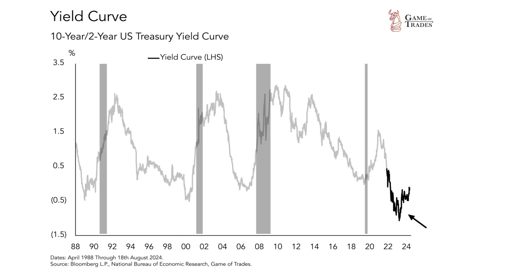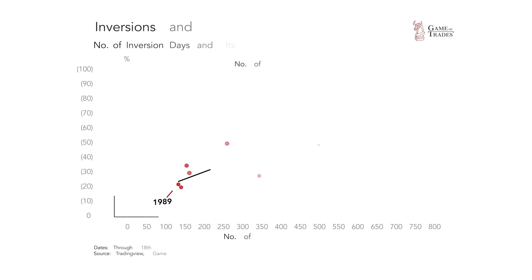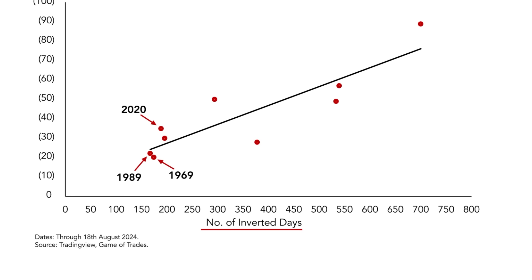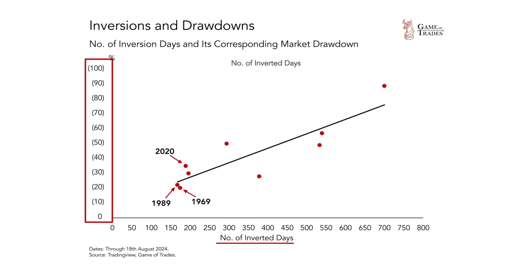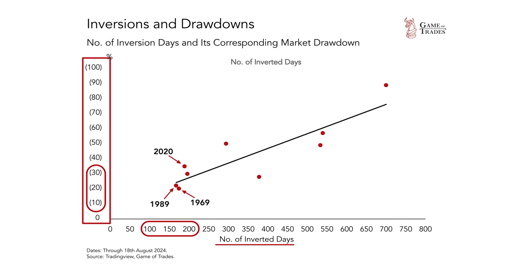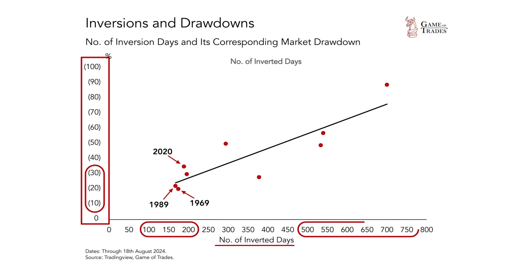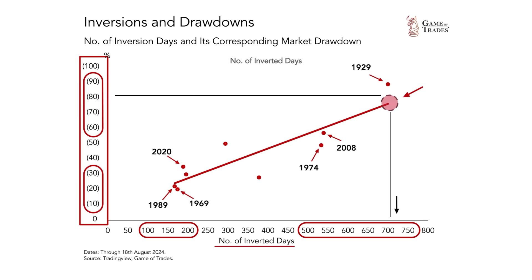This has actually been the longest yield curve inversion since 1929, where the yield curve was inverted for over 700 days. This chart plots the number of days the yield curve was inverted against the size of the market drawdowns that you typically see in the recession that follows. When inverted for a shorter period, it leads to shallower corrections. When inverted for longer, it suggests monetary policy has been too tight for too long, which historically has caused severe market drawdowns like 1974, 2008, and 1929. Today, we are at a level that puts the market at risk of a massive drawdown when the recession actually materializes.